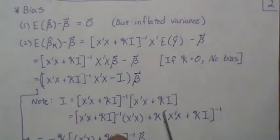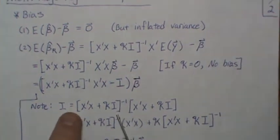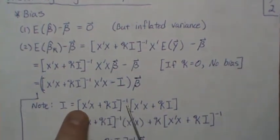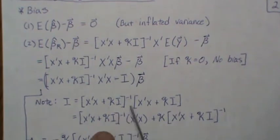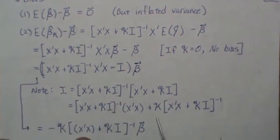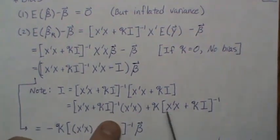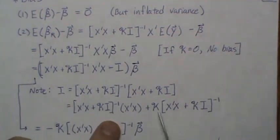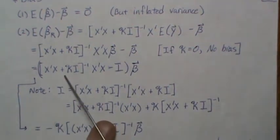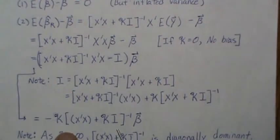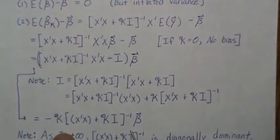Note that if we take this matrix and its inverse we get the identity. Then we multiply that into each of those terms. Subtracting over, we get an expression for this, and so this is the bias associated with the Ridge Estimator.